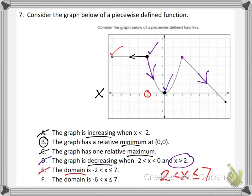Choice F is correct though. The domain is from negative 6 to positive 7. The lowest domain value is negative 6 right there, and the highest is positive 7 right there. So F is correct.